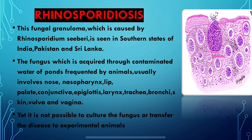This fungus is acquired through contaminated water of ponds which have been frequented by animals. The feces, waste, and everything from the animals leads to the fungal growth.